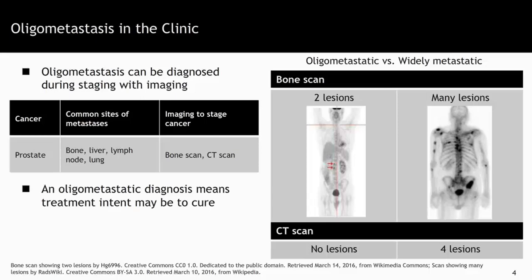For example, if a patient were diagnosed with prostate cancer, they would undergo usual staging imaging to look for metastasis in likely sites. On the right, you'll see a scenario with a bone scan showing two lesions — and that same person perhaps would have had a CAT scan with no lesions. That's in comparison to the far right, where the bone scan has many lesions and the CAT scan was reported to have many lesions. The first scenario would be an example of a patient with oligometastatic disease.